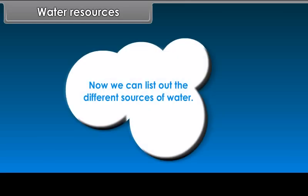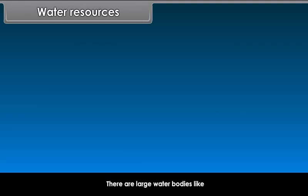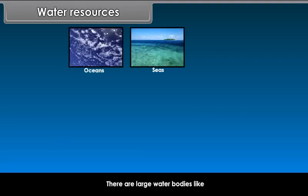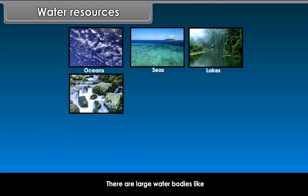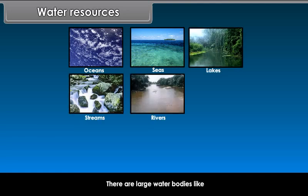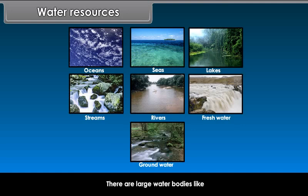Now we can list out the different sources of water. There are large water bodies like oceans, seas, lakes, streams, rivers, freshwater, and groundwater. These are the different sources of water on Earth.